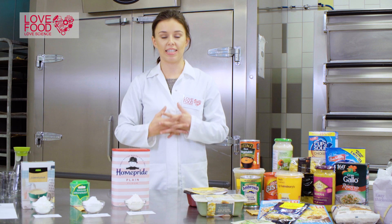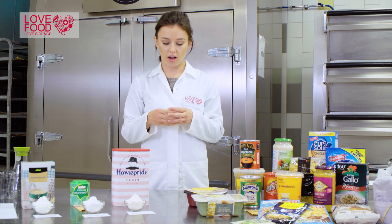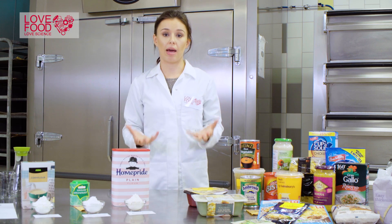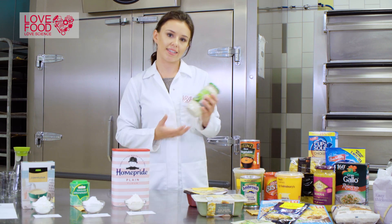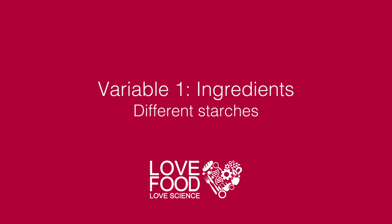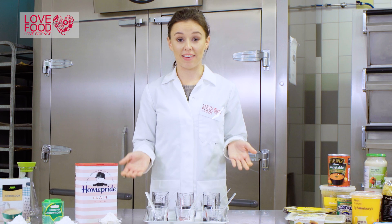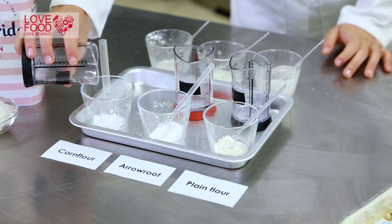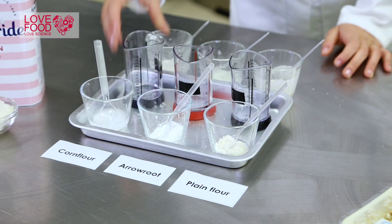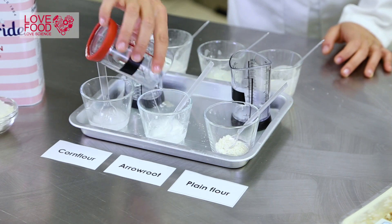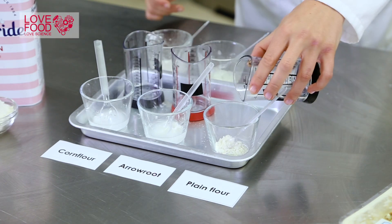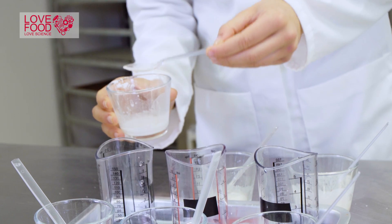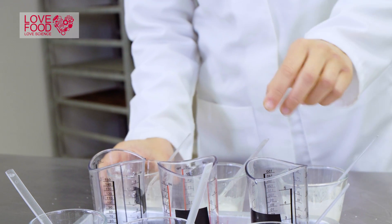They work by gelatinization under heating and water, which is where the starch granules swell. The amylose then leaches out and this forms the gel network which thickens products like this. If we add the same amount of water to the corn flour, arrowroot and the plain flour and give them a little mix, we can see that they have different viscosities.